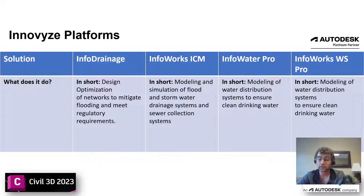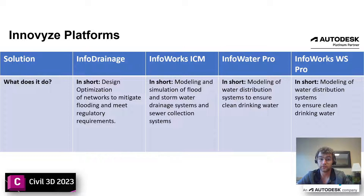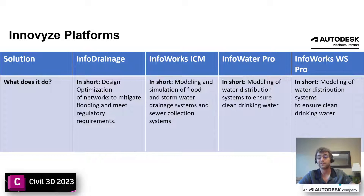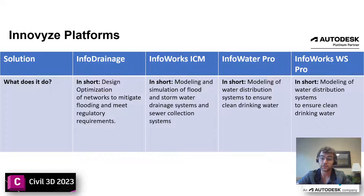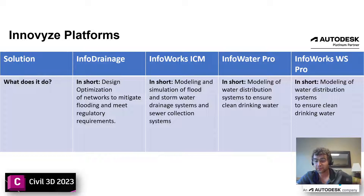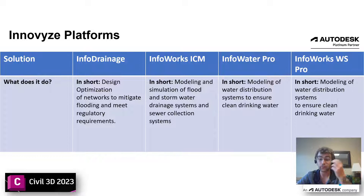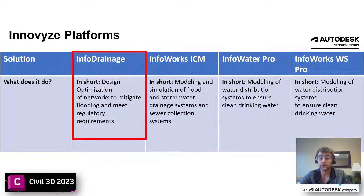There are four different offerings in the Innovyze platform, each with different prices and licenses. First is InfoDrainage — design optimization and networks to mitigate flooding and meet regulatory requirements. Second is Infoworks ICM — modeling and simulation of flood and stormwater drainage systems and sewer collection systems. Third is InfoWater Pro — modeling of water distribution systems. Fourth is Infoworks WS Pro — also water distribution modeling. So we have runoff modeling, combined sewer, stormwater, and drinking water.